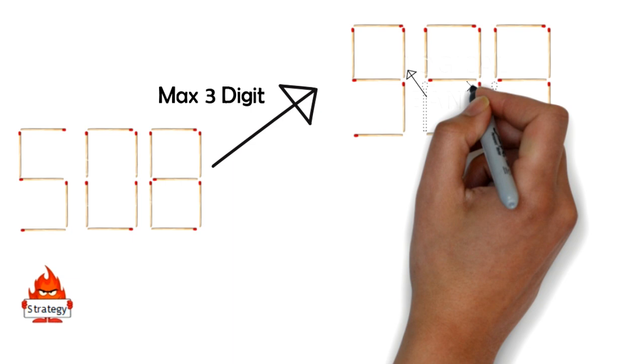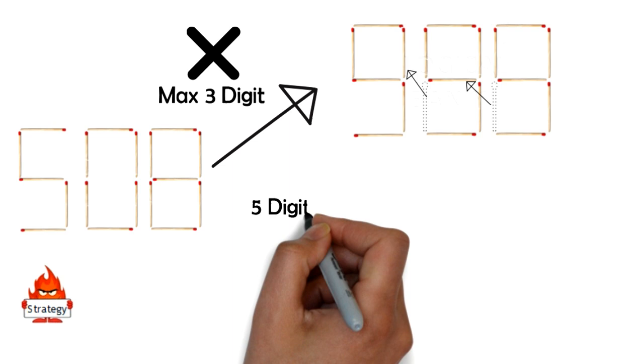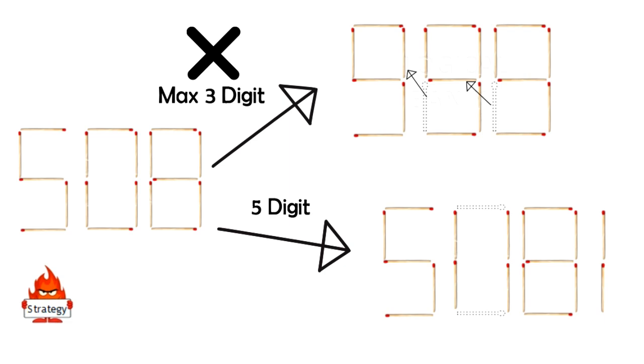Now let's think if a five-digit number is possible using these matchsticks. Then yes it's possible. By moving two matchsticks you can make 51181 but again that is incorrect. Then what is the correct answer?